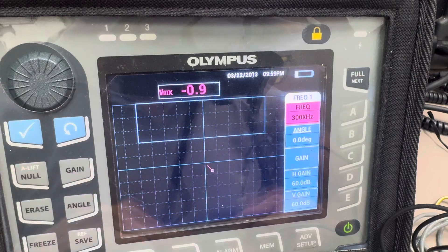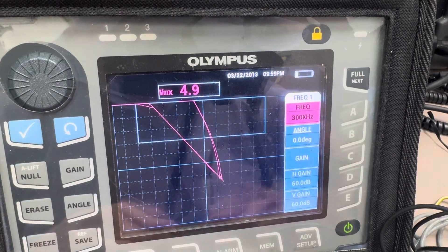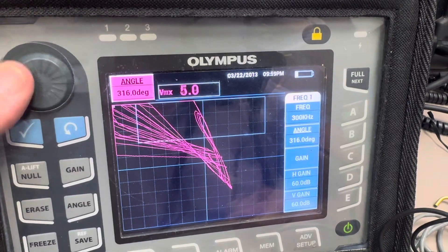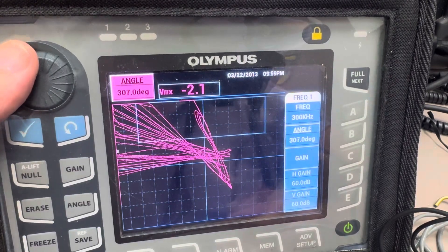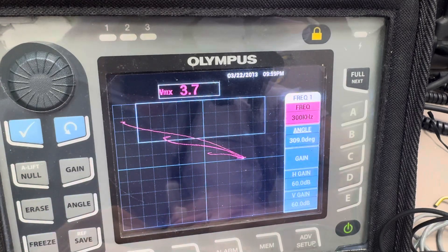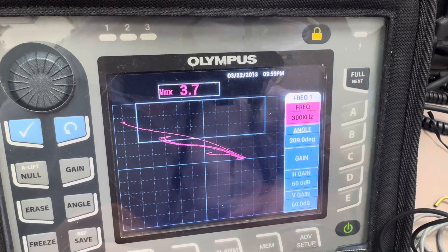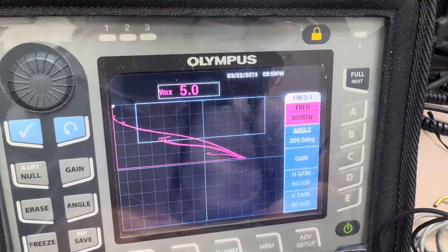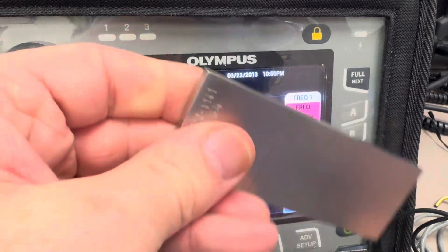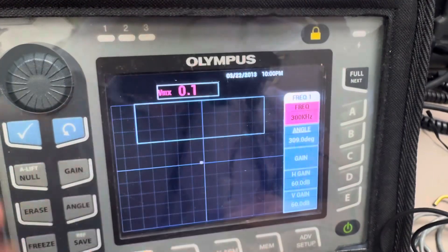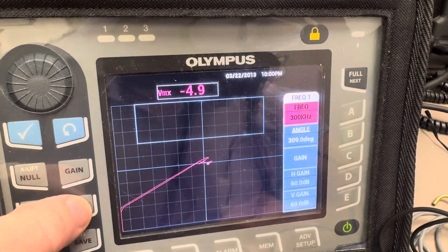Then we'll adjust our angle a tad. Okay, so there's your three EDM notches: 8 mil deep, 20 mil deep, and 40 mil deep. Of course if you use carbon steel they're going to go in a different direction, they're going to go more vertical.